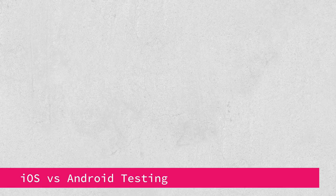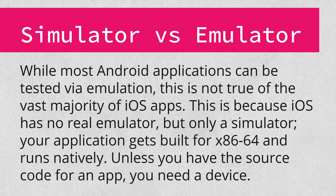Now let's talk about the differences in testing iOS apps versus Android apps. While there are many similarities between the operating systems from a user and even developer perspective, there are massive differences from the perspective of a security researcher. In the Android world, you have an emulator capable of running practically any app. In the iOS world, the only thing you have is the simulator, which runs only x86 apps — nothing from the App Store. If you have source code, you can build and run it in the simulator, but that's not the case for most things you care about. This means that in the vast majority of real-world cases, you're going to need to test on a real device.